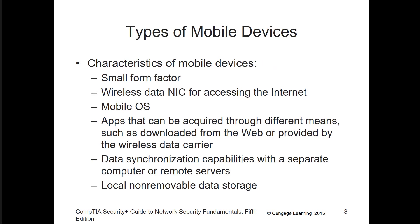Types of mobile devices normally have certain characteristics. They're small, they normally have a wireless data NIC, and they'll probably have a dedicated mobile operating system. Apps can be acquired through different means, typically through some type of web store like Google Play or through iTunes and the App Store. Data synchronization capabilities will be there, and normally they'll sync between the smaller devices and a web service or to a larger computer. They have localized non-removable data storage, meaning the data storage is built in and not upgradeable.